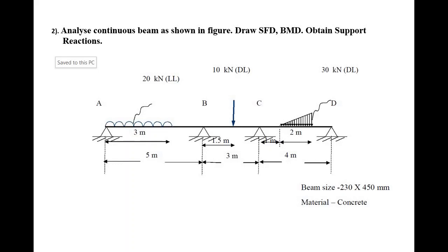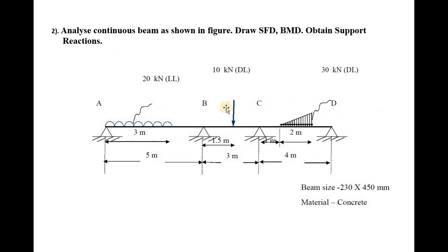Hello everyone, today I am going to explain how to analyze a continuous beam using StatPro software. For that beam we should draw SFD as well as BMD and we should find out the support reactions. The whole continuous beam is divided into 3 spans: AB, BC, and CD.